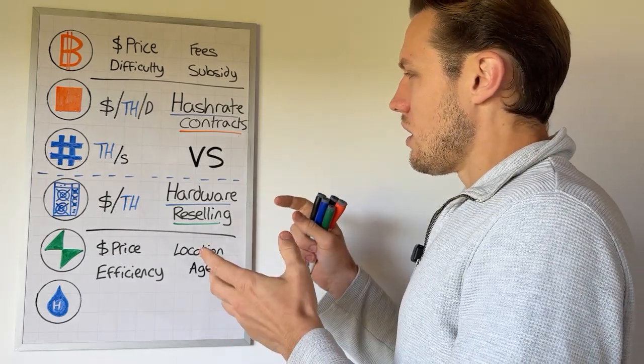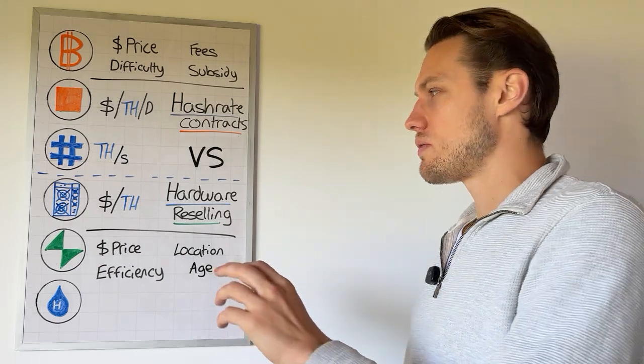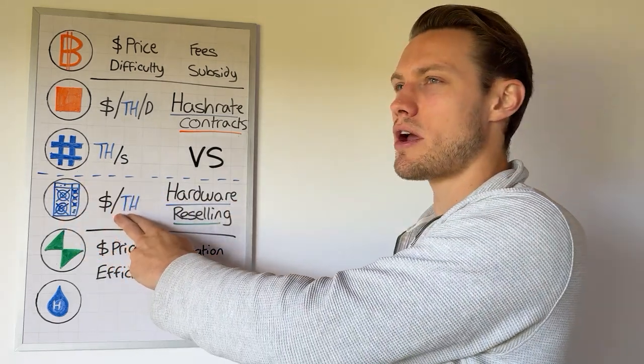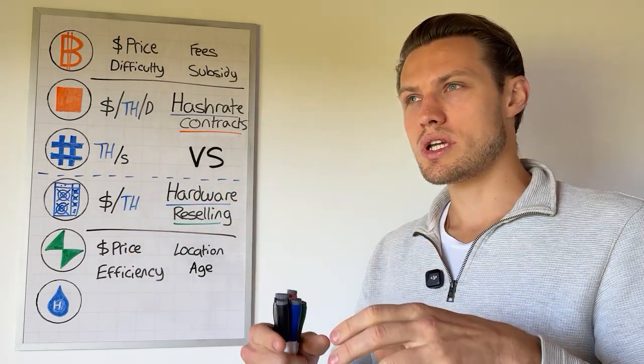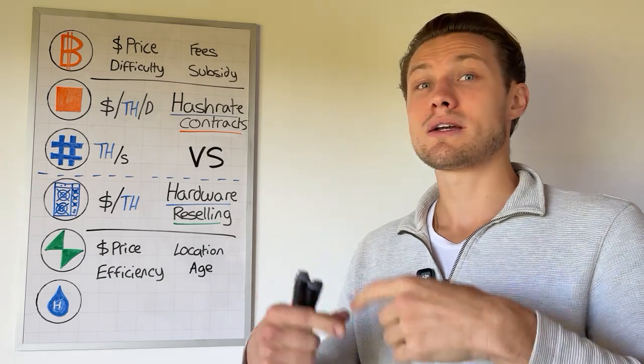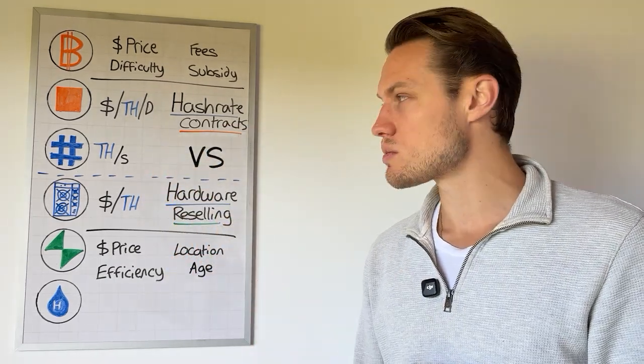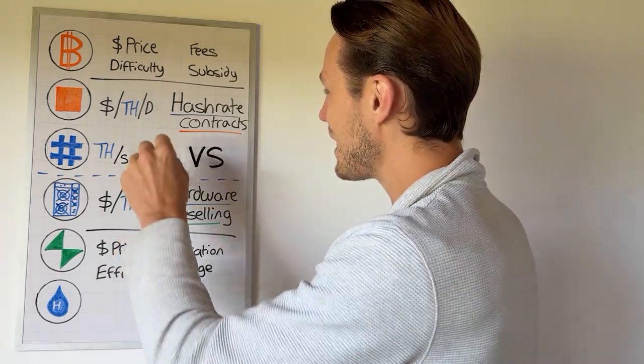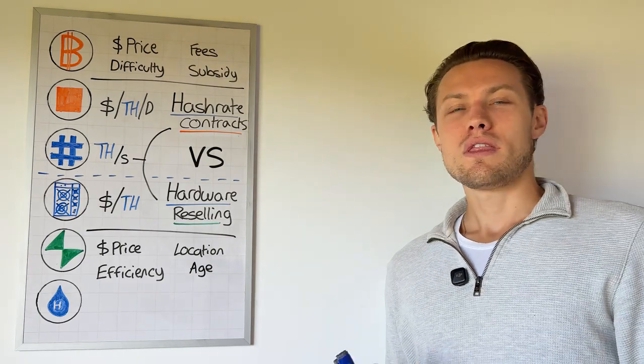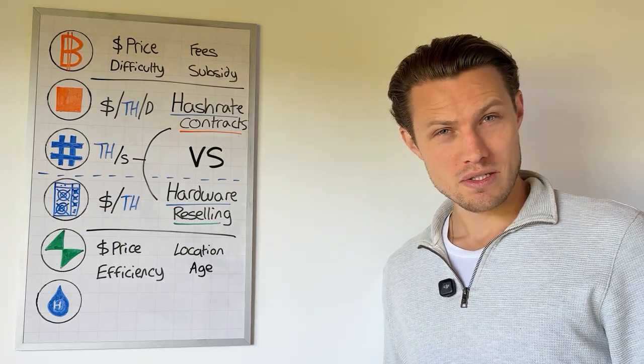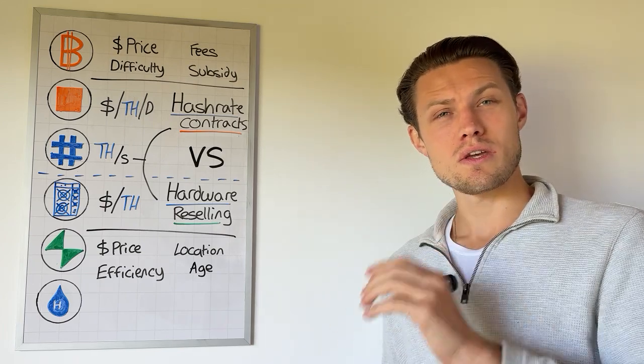And so where it can get interesting is what if there was a combination of the hardware reselling dollar per tera hash pricing of things in combination with the machines accessible to purchase plugged in producing hash rate. We also have access to lock in hash rate contracts as well. What if there was a way of combining the two in a single product? That'll be something that you may be able to find in the comments or the description of this video. Thank you for listening. I hope you enjoyed and I'll see you in the next video. Goodbye.